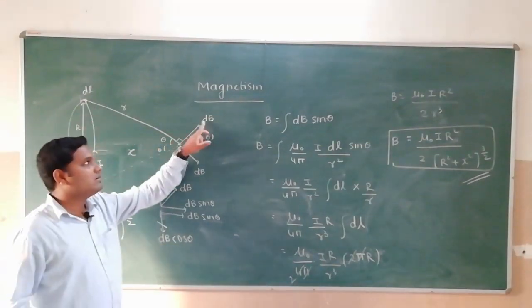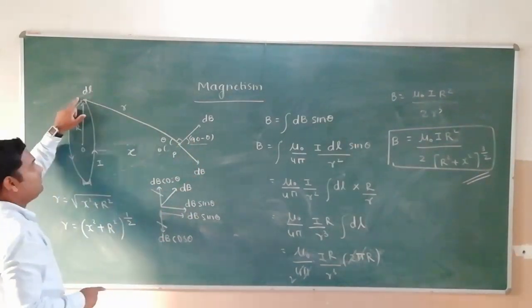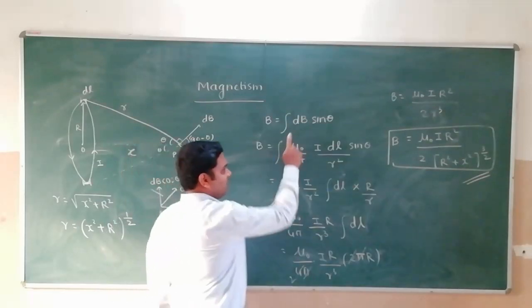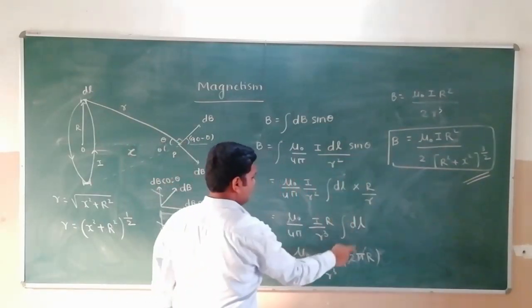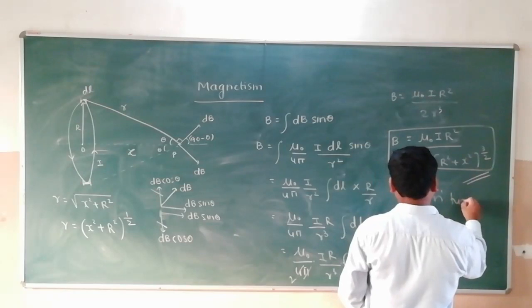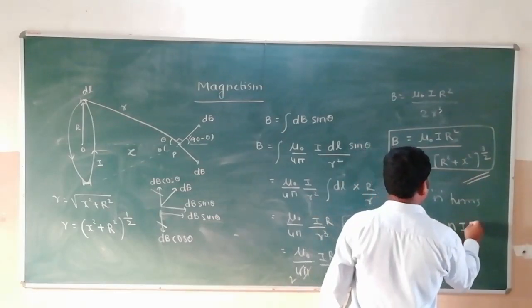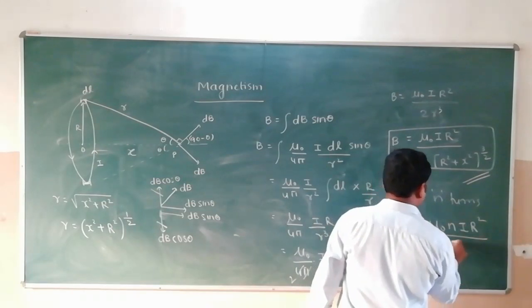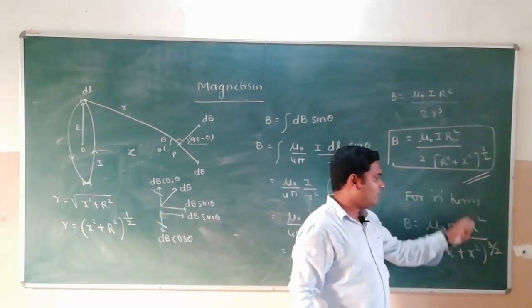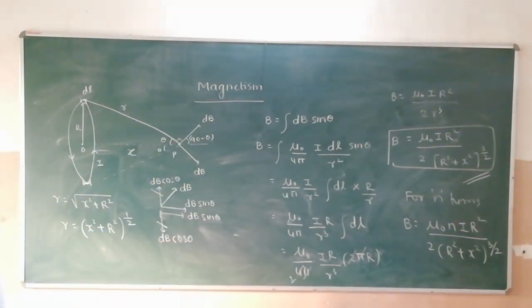If instead of one turn you have n turns, the magnetic field B formula becomes mu naught n i R square by 2 times R square plus x square raised to 3 by 2. Simply replace current i by n into i.